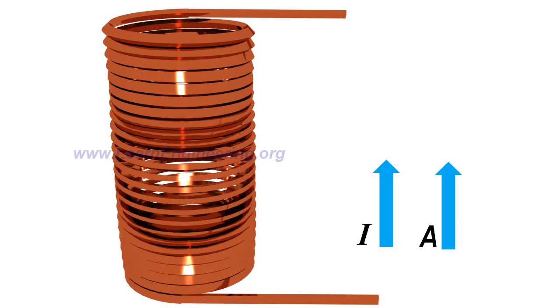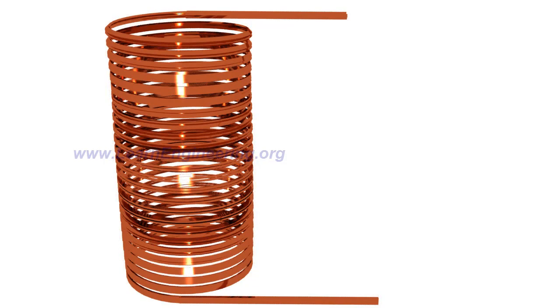For this reason, two or more conductors connected in parallel have to be used to reduce eddy current loss. The modern practice is to use a continuously transposed cable.